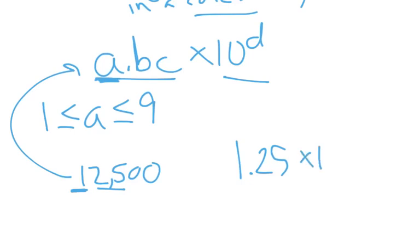And then we're going to go times 10. And here's where we get to use that decimal counting trick. How many times did I have to move the decimal? One, two, three, four. So the decimal's originally here. It's now between the one and the two, and that moved it four times. And so that's going to become 1.25 times 10 to the fourth. And that's how you write numbers in scientific notation.